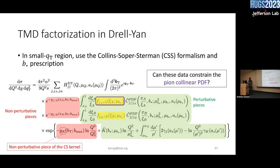Looking back to the formula for the Drell-Yan cross section — we have the hard part, the Fourier transform with respect to BT, and now I'm fleshing out what these TMD pieces look like individually. On the first line, this is the operator product expansion for the pion TMD with its evolution and non-perturbative intrinsic structure. Then you have the OPE for the nucleus times its non-perturbative TMD structure. You also have the non-perturbative piece of the CS kernel, factored out because it's universal between the two types of hadrons. The collinear PDF is also a non-perturbative structure that can be parameterized and fit.